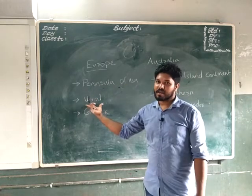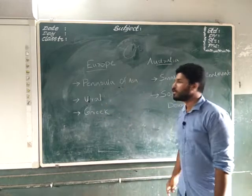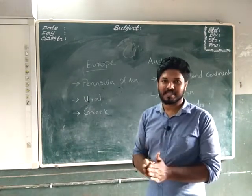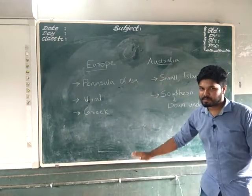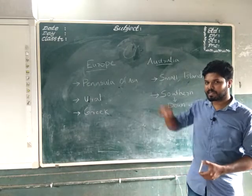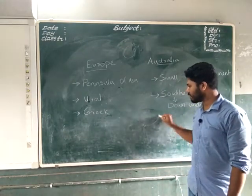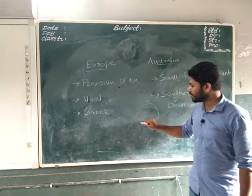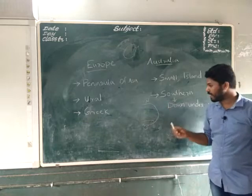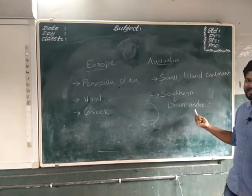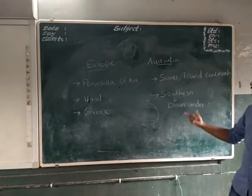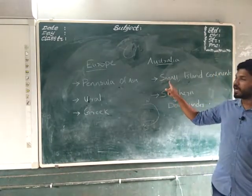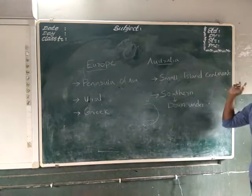Australia is at the same time a country and a continent. It is situated in the southernmost part of the earth — we have a north and south pole, and Australia is situated entirely in the southern hemisphere. Hence it got the name 'Down Under' — it is more under. Australia is also the smallest continent.